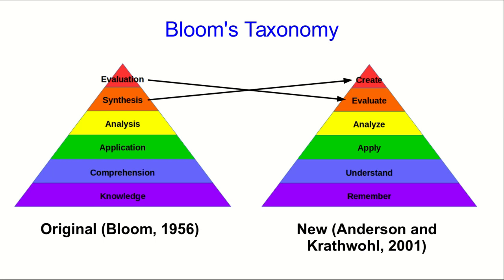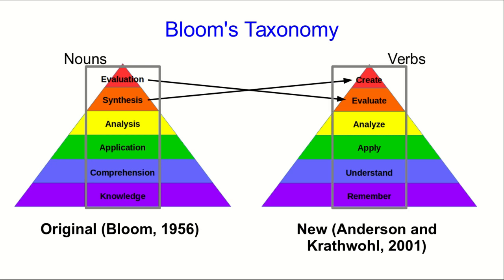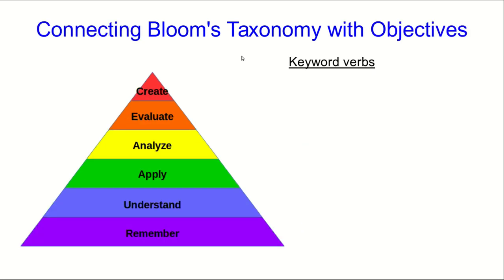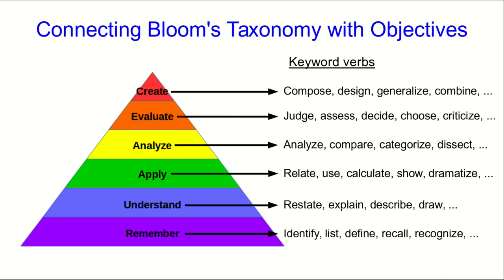Also, just realize when you look up Bloom that you may come up with either the old or the new version, depending on where you look. You'll also notice that the original was all stated in terms of nouns. Now, Anderson and Krathwohl did not verbify it, but these days when people talk about Bloom's Taxonomy, they tend to talk about it in terms of verbs because we're using it to think about learning objectives, which are all about what we have students do. Go online and Google 'Bloom's Taxonomy keywords,' and you'll find long lists of keyword verbs. When you write an objective, you can look at the key verb and that'll often give you a pretty good idea of what level of Bloom's Taxonomy the objective is at. We'll look at this more in lecture number four.